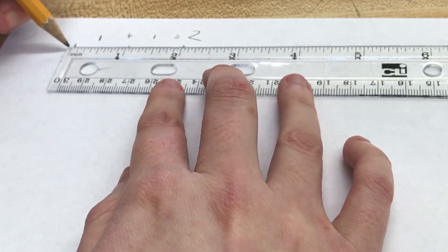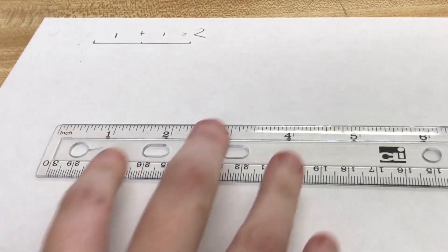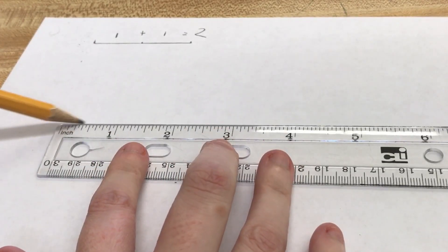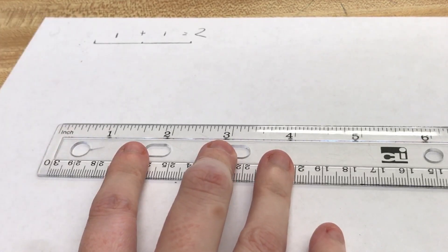Every time we use a ruler, you have to start at the zero. So why is there a zero? Who cares about this area right here, right? When do we ever really use this?